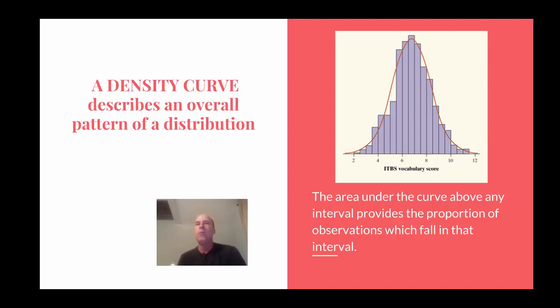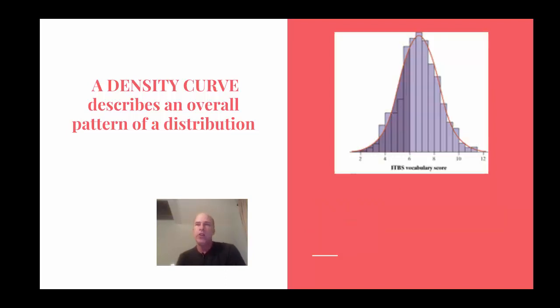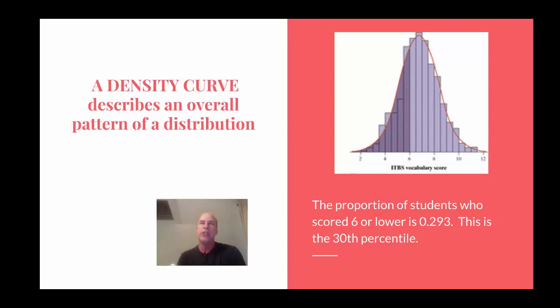So for example, if I wanted to know the percentage of students who had a score of 6 or below, can you imagine how we would use that curve to do that? Well, all we need to do is find a score of 6 and shade in the area. Now finding that area takes technology. We'll use graphing calculators and different websites to do it. But that area, that dark shaded area, it really is the percentile. The proportion of students who scored 6 or lower here is 0.293. And I use technology to find that. That would relate to the 30th percentile.